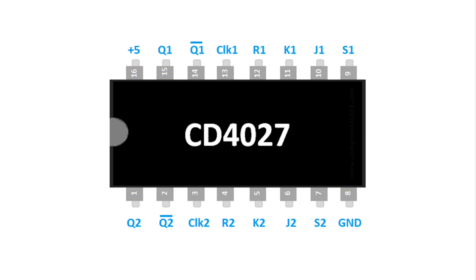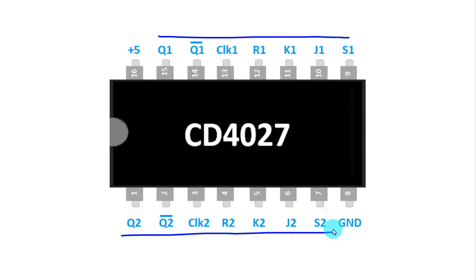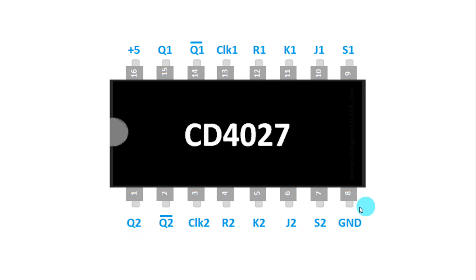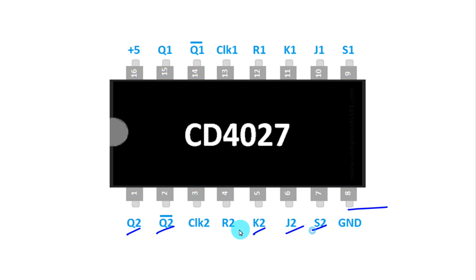This is the pin diagram of CD4027. As you can see, we have the first flip flop and the second flip flop. For the practical we will use the second flip flop. Pin number 8 and 16 are the power supply pins. Q and Q bar are the outputs. J, K, set, reset, and clock pins are the inputs.